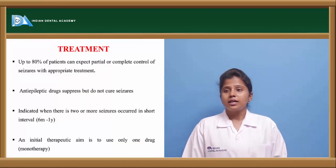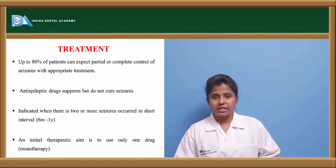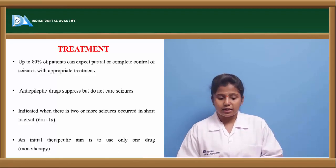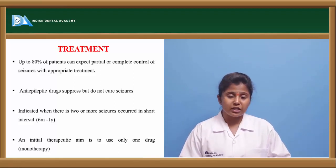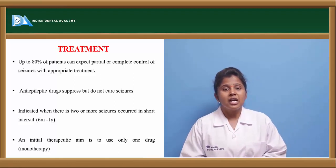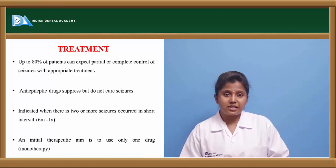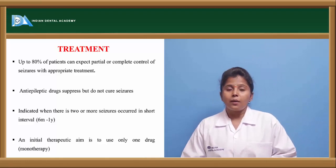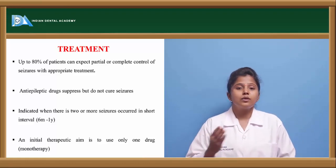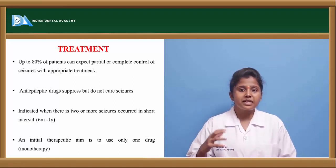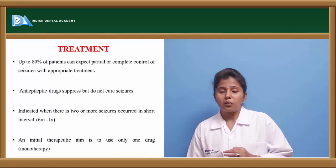Up to 80% of patients with partial seizures can be treated easily; absence and generalized seizures are rare. Anti-epileptic drugs just suppress the seizure frequency — they never cure epilepsy. Therapy is given for almost 6 months to 1 year based on severity and type. Initially, treatment is given with a single drug (monotherapy); if monotherapy fails, polytherapy is given.